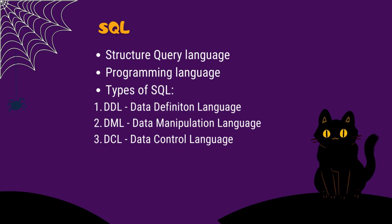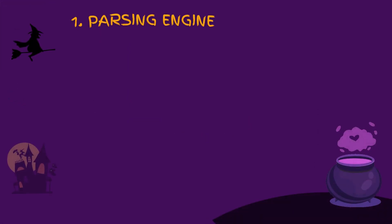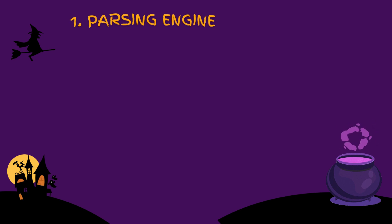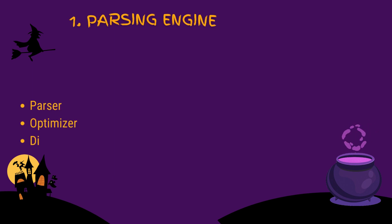Number one is the Parsing Engine. This further consists of three main parts: Parser, Optimizer, and Dispatcher.